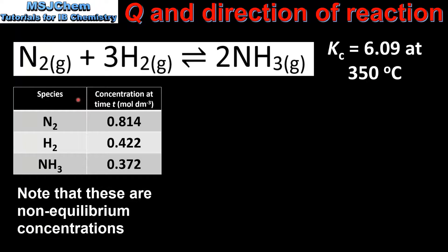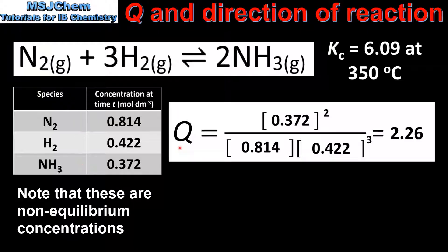In this table we have the concentrations at time t for the reactants and products. Next we will input the values into the expression for the reaction quotient Q. This gives us the value of the reaction quotient Q of 2.26.